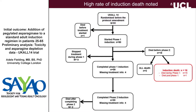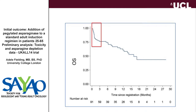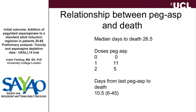Sixteen patients dying of treatment-related toxicity is clearly very significant — in a trial of this magnitude you have to take it quite seriously. The survival curve shows a very steep drop-off during induction. We were very concerned it was related to the pegylated asparaginase and started to look into that in more detail. The median number of days to death was 26.5, so people were dying very early in the protocol, and a lot of these patients had only received one dose of pegylated asparaginase. There was a fairly close relationship between receiving the PEG-asparaginase and dying.